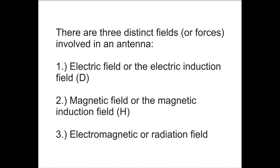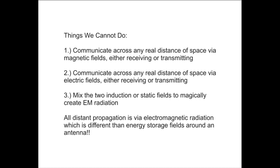The other two fields — the local electric field and the local magnetic field — are just short-distance things. We can't communicate across any real distance of space with the magnetic fields; we can't do this receiving or transmitting. Similarly, we can't communicate across any real distance of space with the electric fields. The communications we have over a long distance is with electromagnetic radiation.